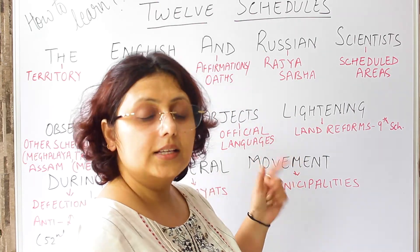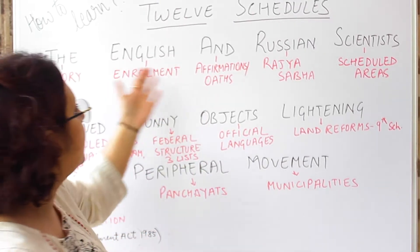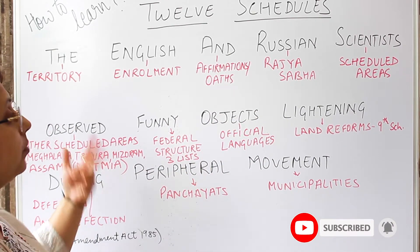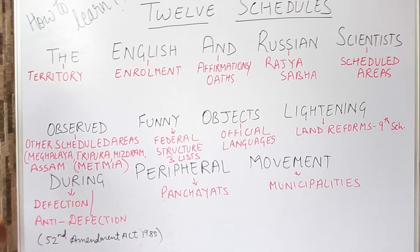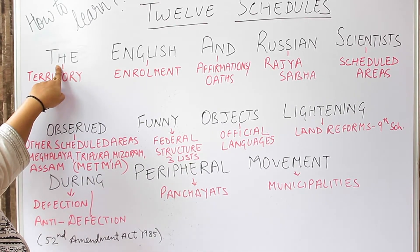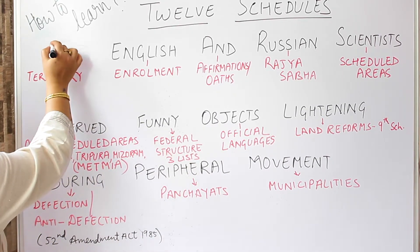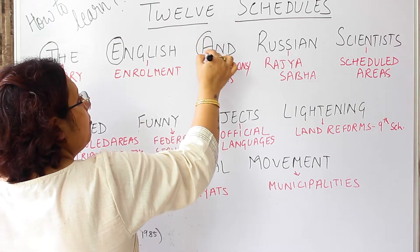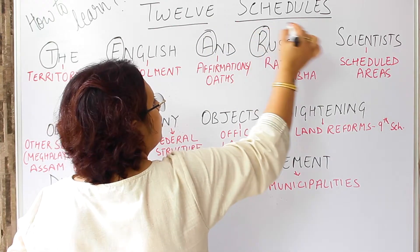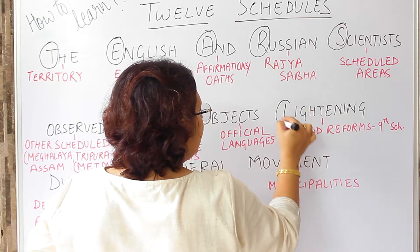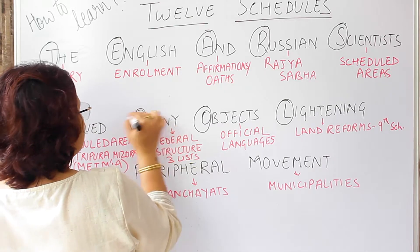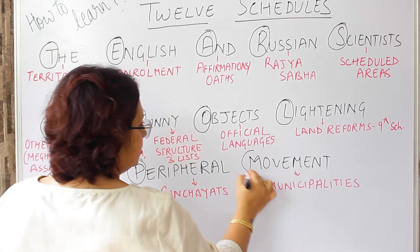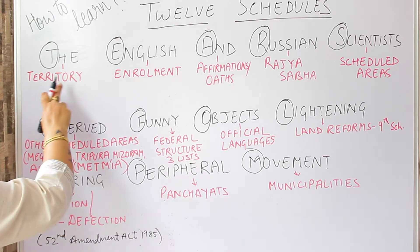It's so easy! 'The English and Russian scientists observed funny objects lightning during peripheral movement.' Let's see how this works. We will take the first letters of each word and convert them into the schedules — we are going to map all these words to their corresponding schedules.